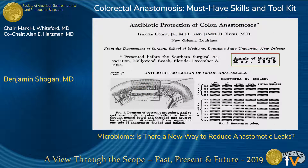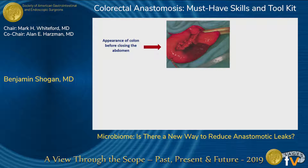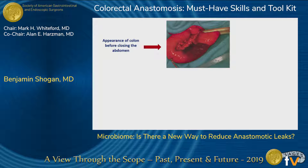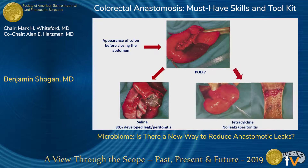This study done in 1955 by Dr. Isidore Cohen: he took dogs, gave them an anastomosis, then devascularized the segment right adjacent to the anastomosis. He put a catheter in on the devascularized segment and infused either tetracycline or saline. Not surprisingly, the animals that got ischemia looked awful. On post-op day seven, those that got saline leaked, developed peritonitis, and died. Surprisingly, those that got tetracycline were completely protected from anastomotic leak, and none of those animals developed peritonitis.